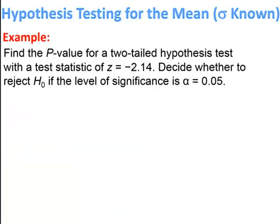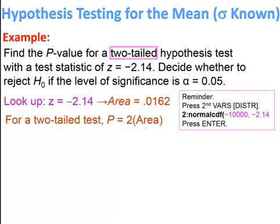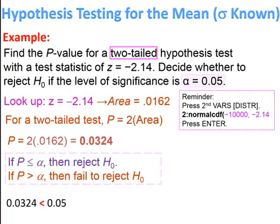Example: for a two-tail hypothesis test, find the area for the z-score and double it. The p-value is .0324. Comparing to alpha = .05, the p-value is less than alpha, so we reject the null hypothesis.